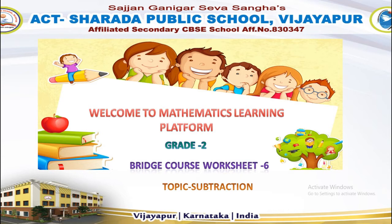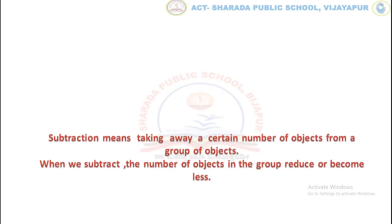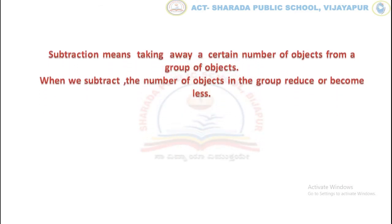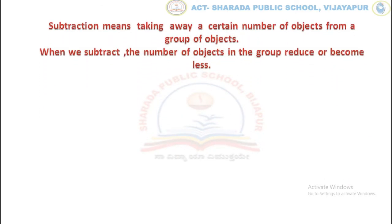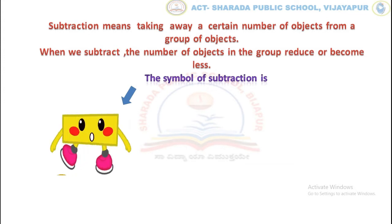Children, let us recall what is subtraction. Subtraction means taking away a certain number of objects from the group of objects. When we subtract, the number of objects in the group reduce or become less. The symbol of subtraction is minus.